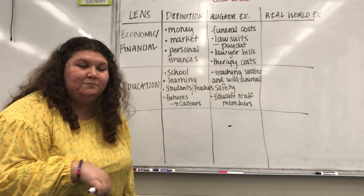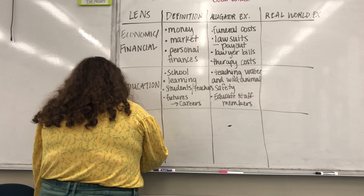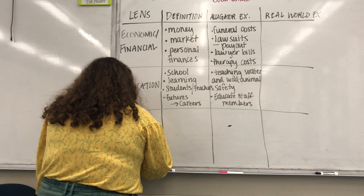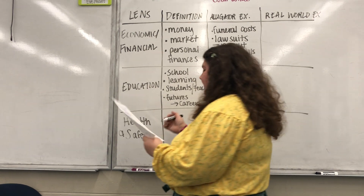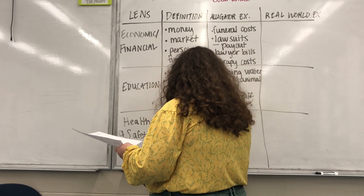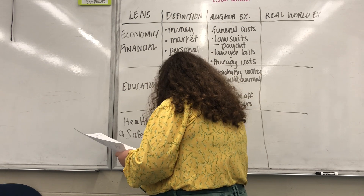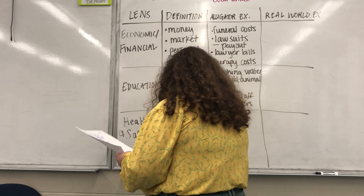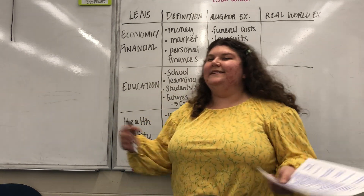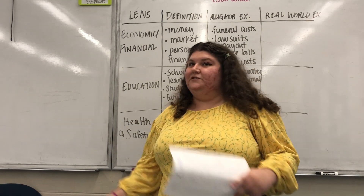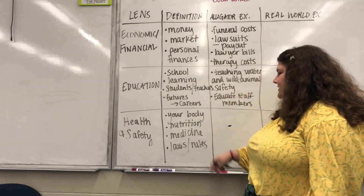We kept talking about being safe — so let's move to the health and safety lens. This is a big one, especially because many of you mentioned COVID. Your health and safety has to do with your body, your overall health — things like nutrition, medicine you take to stay healthy, and safety through laws and rules. There are laws and rules in society to keep you safe, like seatbelt laws or being old enough to drive. So for health and safety we've got your body, nutrition, medicine, and laws and rules.